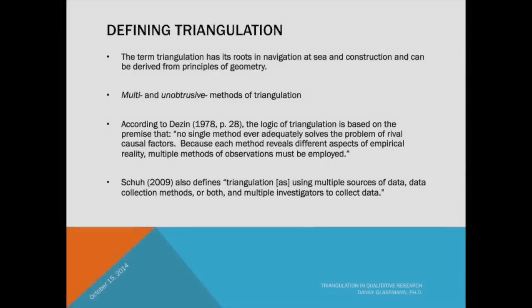Metaphorically, the term triangulation calls to mind the world's strongest geometric shape — the triangle. More specifically, however, the term triangulation is taken from land surveying. Knowing a single landmark only locates you somewhere along a line in a direction from that specific landmark. Whereas having two landmarks, and your own position being the third point of that triangle, you can then take bearings in two directions and locate yourself at their intersection.